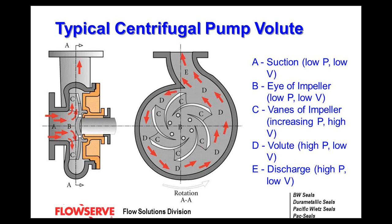At point A, the suction, you start with low pressure and low velocity. As it enters through the impeller eye and into the impeller vanes, these increase the pressure and velocity. As it passes through the volute, pressure remains high but velocity starts to slow. At the discharge you have higher pressure and lower velocity. GPM in equals GPM out; what the pump does is impart head and increase the energy of the fluid.